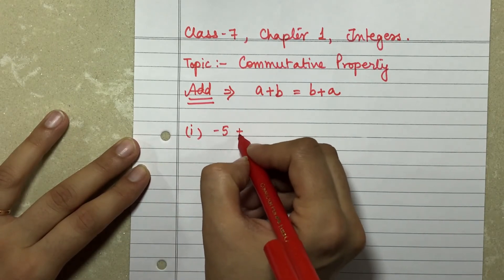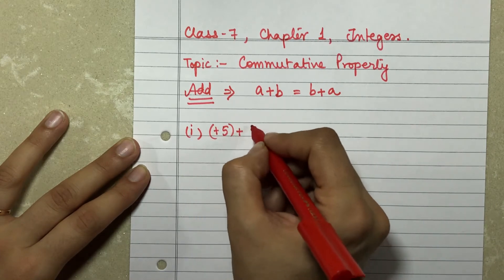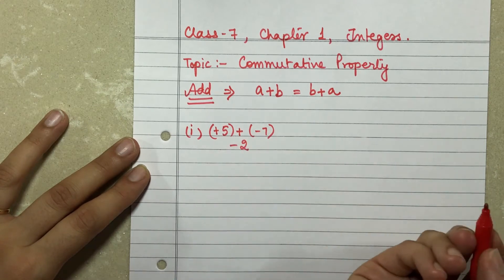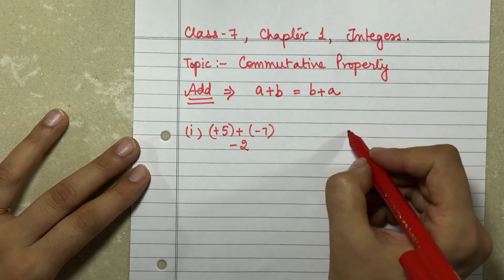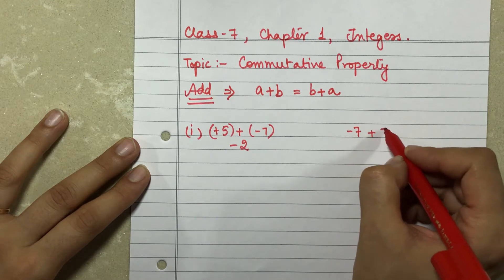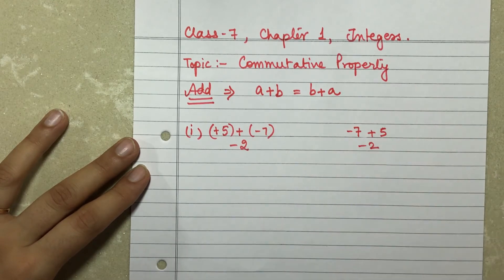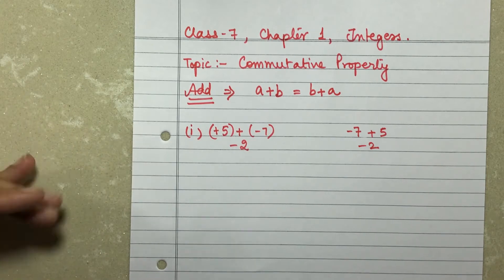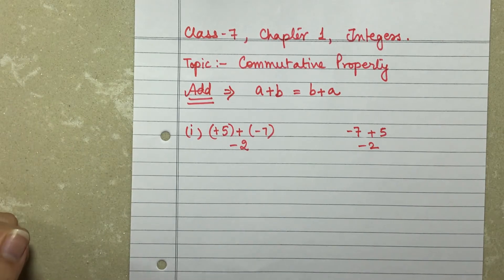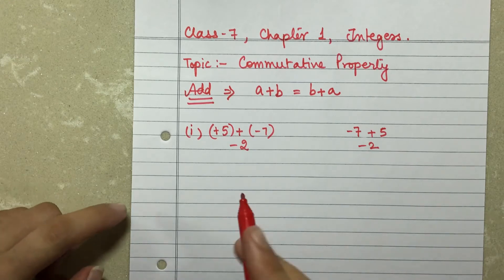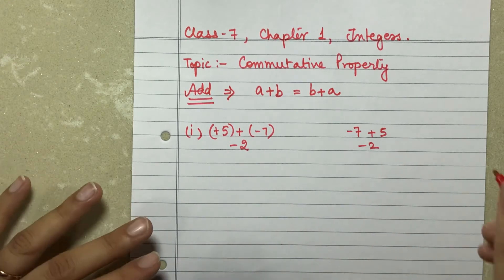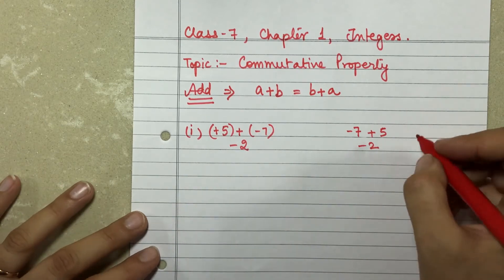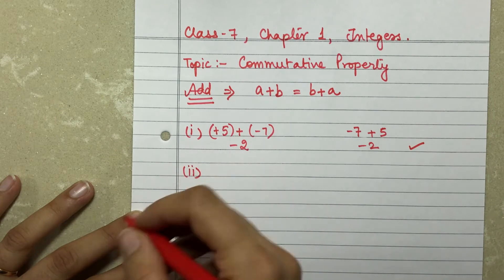I have plus 5 and minus 7. Let's add and get the answer — it comes to be minus 2. And if I switch the places, that is minus 7 plus 5, the answer still remains minus 2. If you have doubt in addition of integers, you can check the previous video — you'll find a link in the description box.